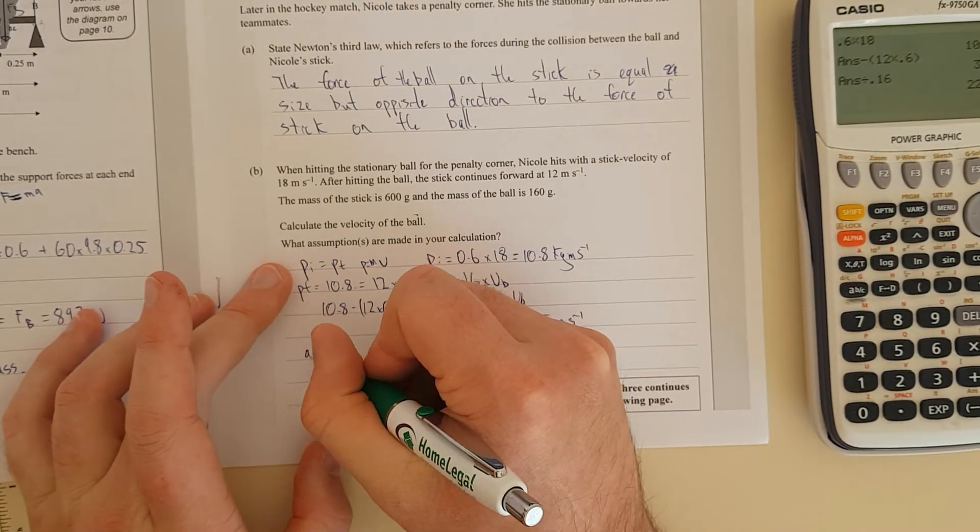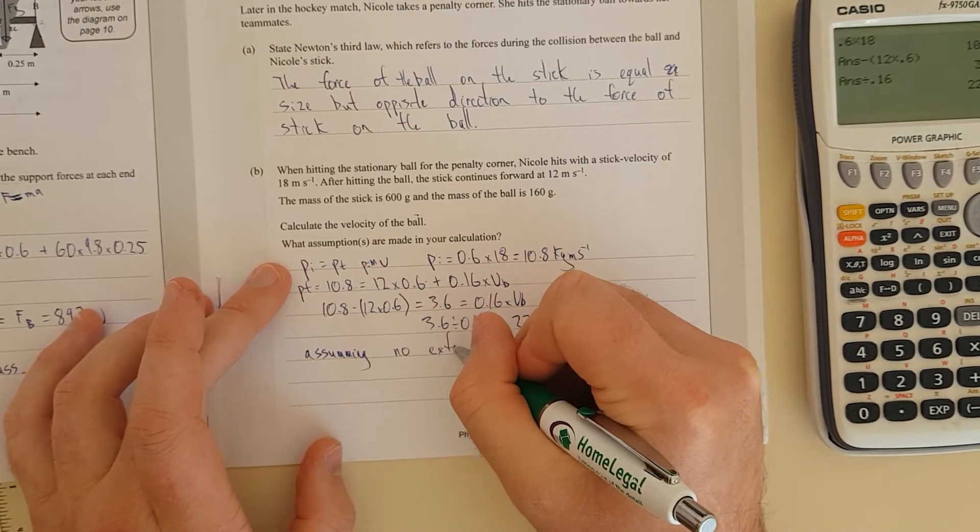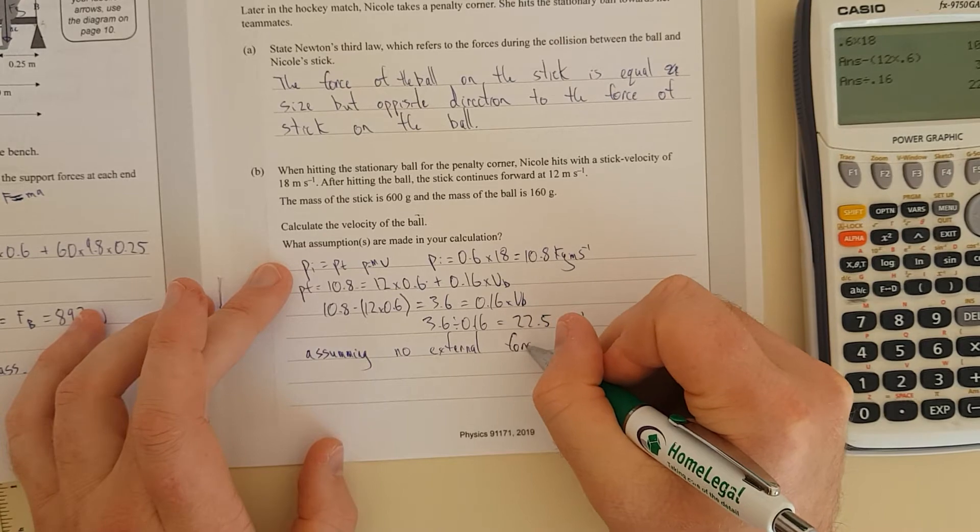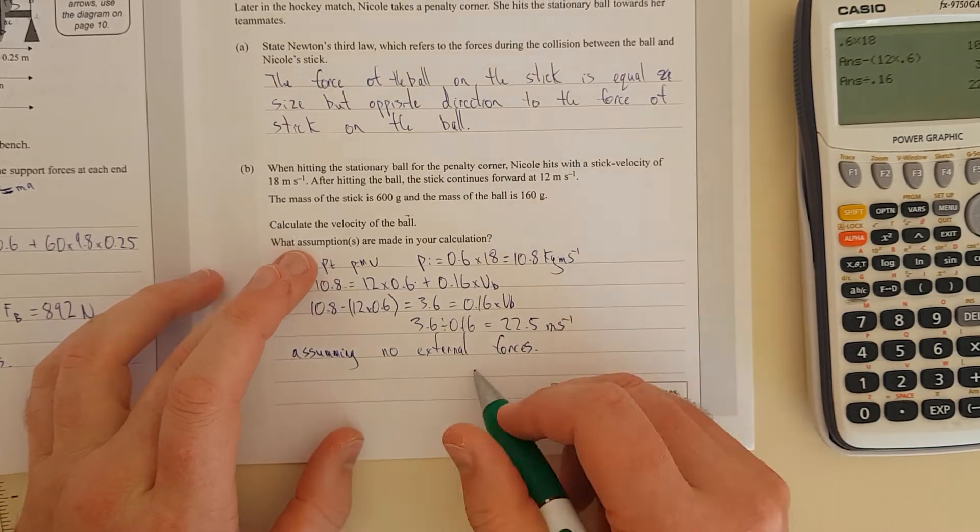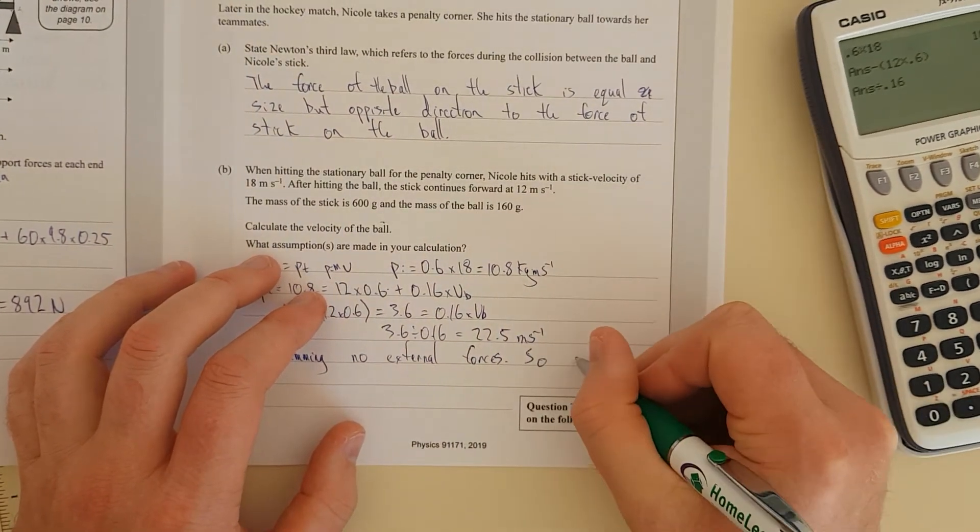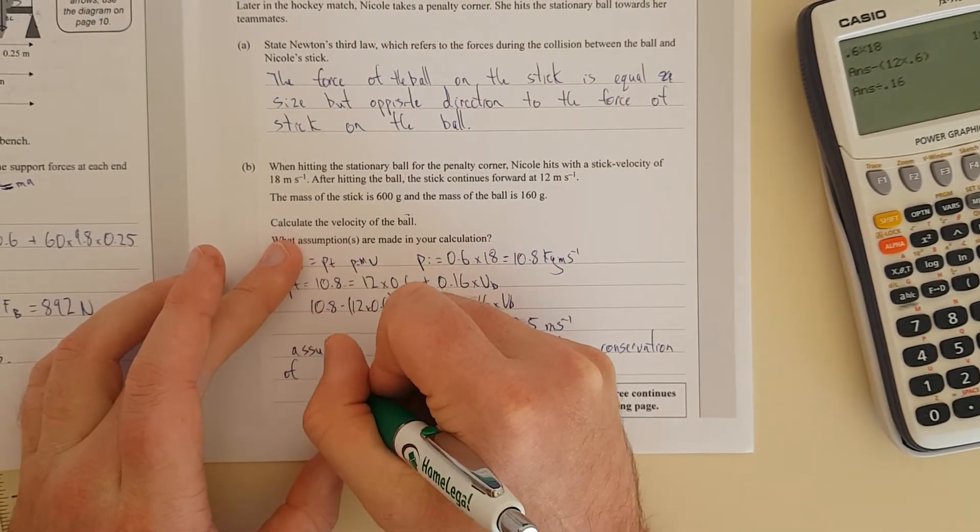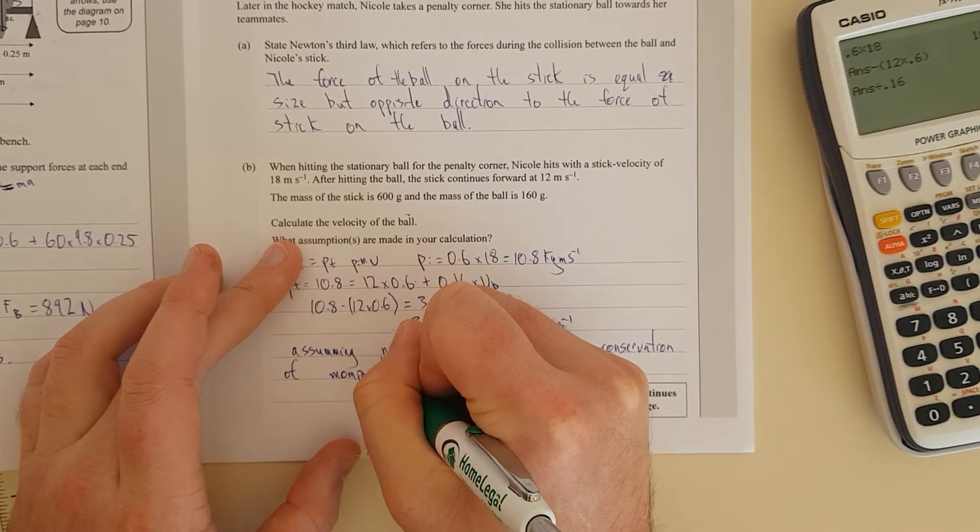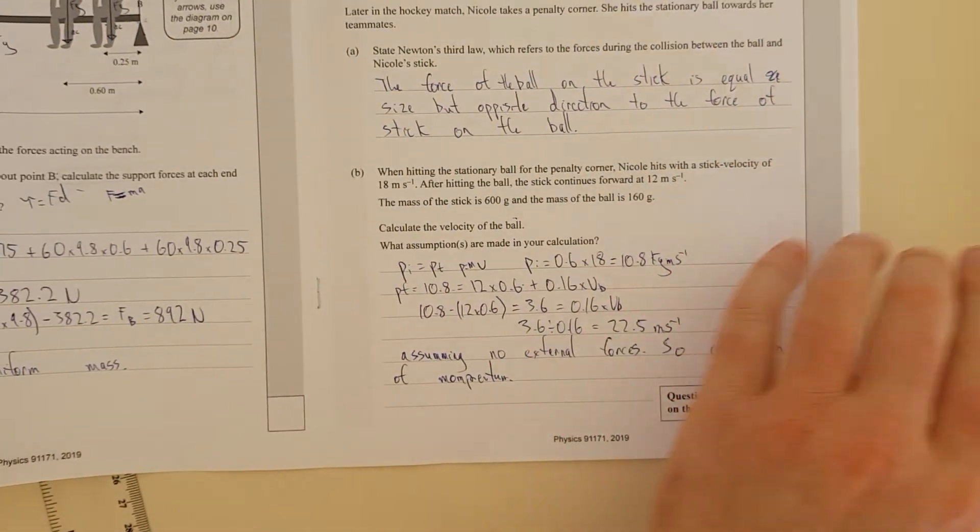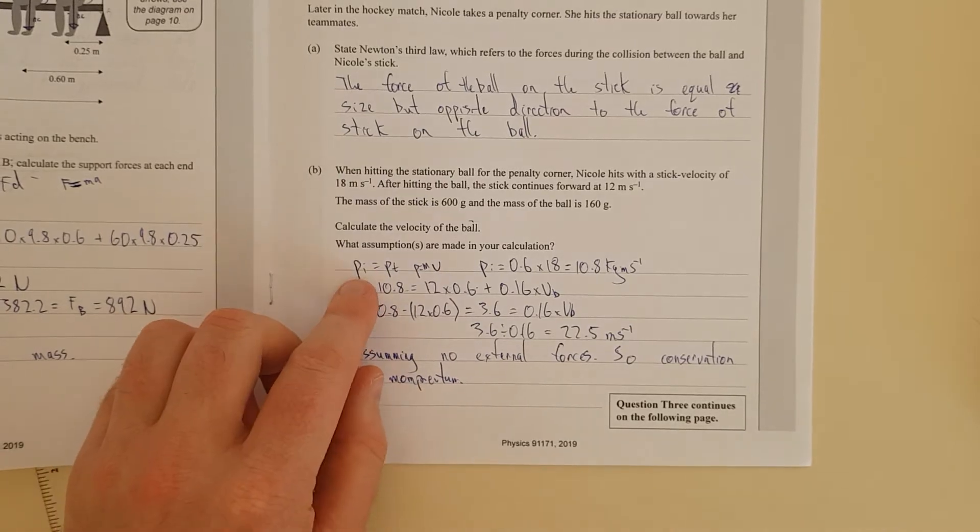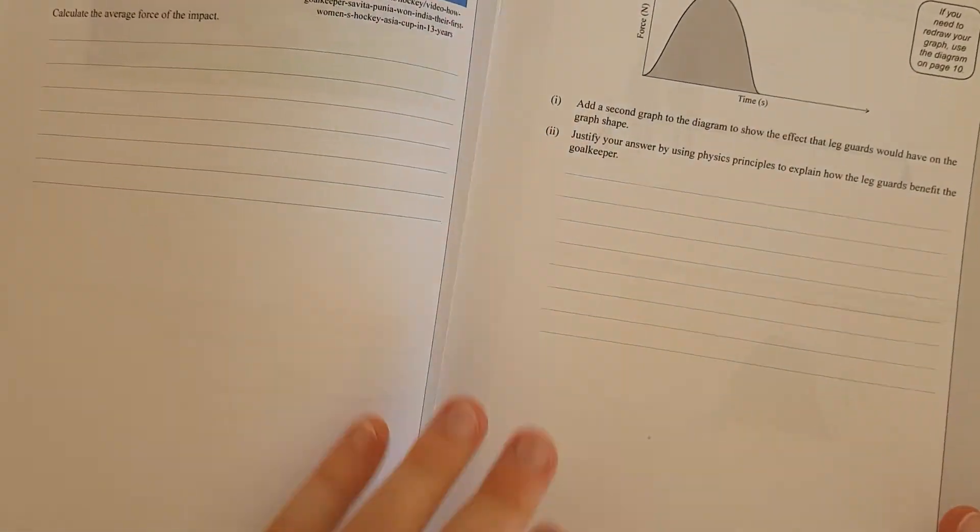So we can see that 3.6 divided by 0.16 equals 22.5 meters per second. And then I'm going to go assuming no external forces. One thing I should have really said, assuming no external forces. Conservation of momentum. Right, that'll do. This is a conservation of momentum. I sort of just stated it without really realizing. I assume this is enough to state it. Conservation of momentum. You've assumed PI equals PF. You need to say no external forces, aka friction of the turf. That would be external force.